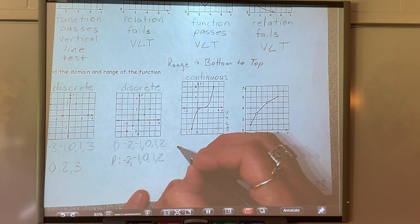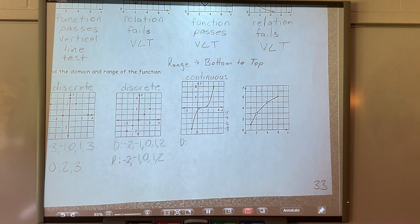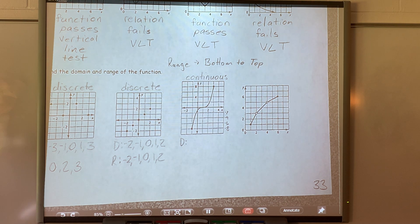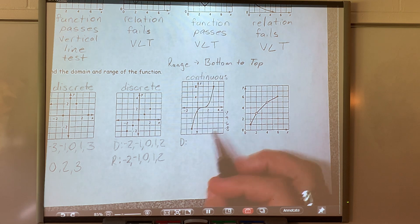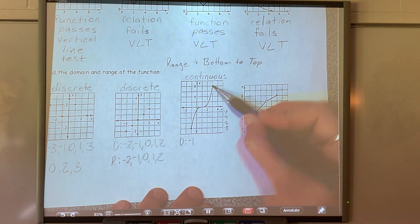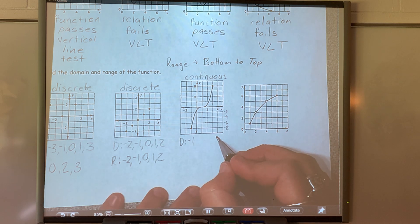When I'm looking at my domain, we're going to write this differently. Going all the way to the left — where does this graph begin? The x axis goes by ones, so it begins at negative 1. Now going to the right — it's continuous, so I follow the graph over, and where it ends on the x axis is at positive 3. So I begin at negative 1 and end at 3.